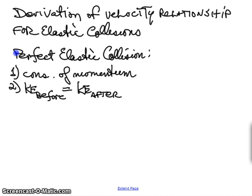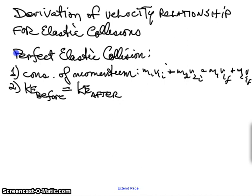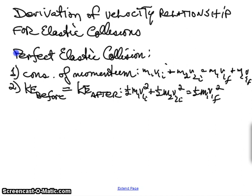That gives you two equations. The conservation of momentum would be M1V1 initial plus M2V2 initial equals M1V1 final plus M2V2 final. The kinetic energy relationship would be one half M1V1 initial squared plus one half M2V2 initial squared equals one half M1V1 final squared plus one half M2V2 final squared. So you can see that you now have two equations, and therefore you can solve for both final velocities.